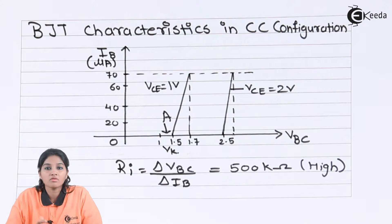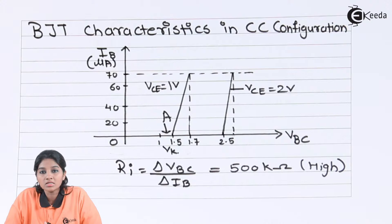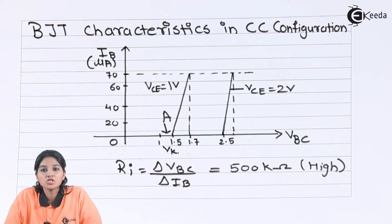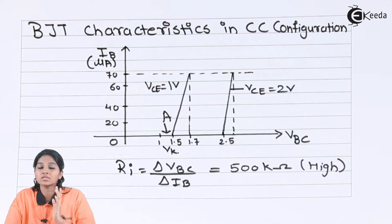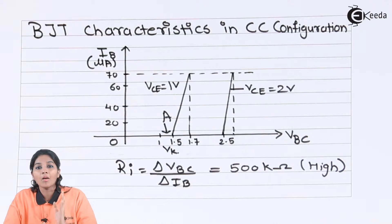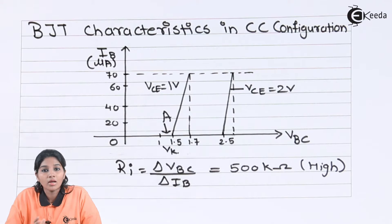Now let's see the input and output characteristics in common collector configuration. As the name indicates, in common collector configuration, the collector terminal is considered as the common terminal. Transistor is a three-terminal device — base, emitter, and collector — and for connecting it into a circuit we require four terminals, so one terminal must be common. Input is applied between base and collector, whereas output is taken across emitter and collector. Base current is considered as input current and emitter current is considered as output current.